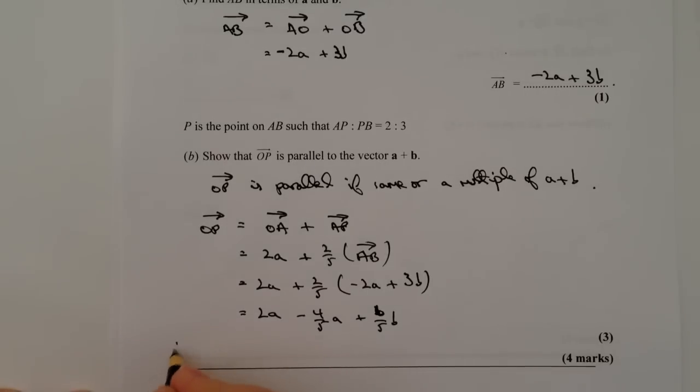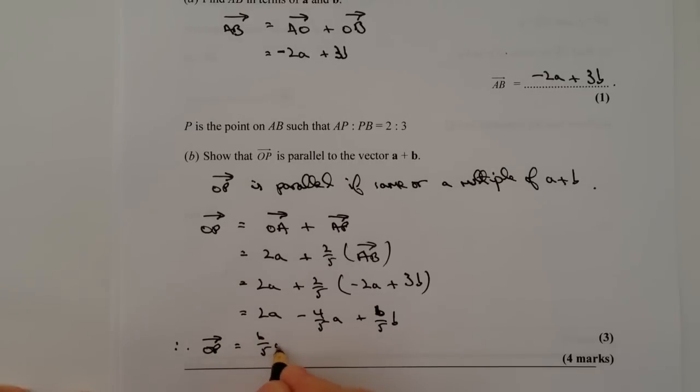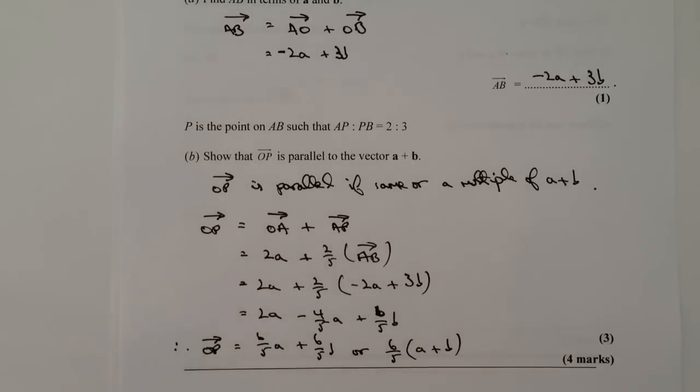OK. So therefore, vector OP equals six fifths a plus six fifths b. Or I could write that as six fifths times (a plus b). And again, working out this fraction. So you've got two wholes minus four fifths. And you need to work through fractions in dealing with that.